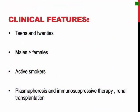Most cases occur in patients in their teens or twenties with male predominance, and the majority of patients are active smokers. Plasmapheresis removes the offending antibodies, and immunosuppressive drugs inhibit antibody production. With severe renal disease, renal transplantation is eventually required.